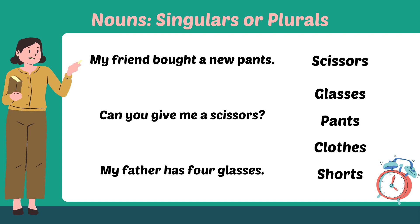So this is singular and plural. But today's topic is a little confusing, because today we are talking about such words or such nouns which are always in plural form. They are always in plural form. For example, you can see on your screen — it's written scissors. Scissors means 'kanchi.' You can never write scissors in singular form. Scissors is always in plural form.